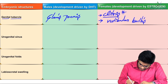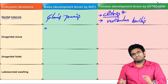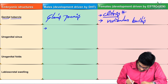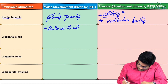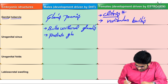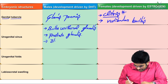The urogenital sinus — in males, under the influence of dihydrotestosterone, it will become bulbourethral glands, prostate glands, urinary bladder, and urethra.